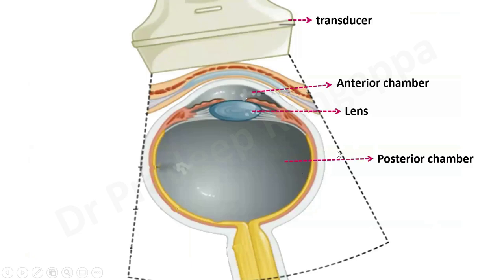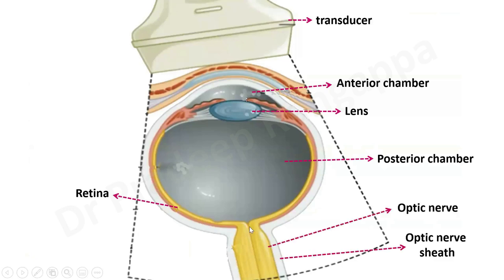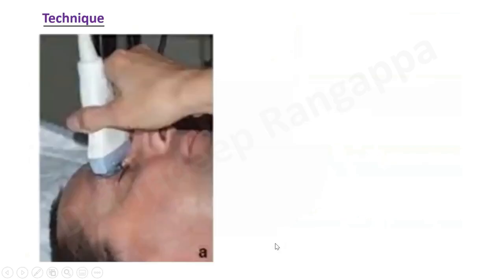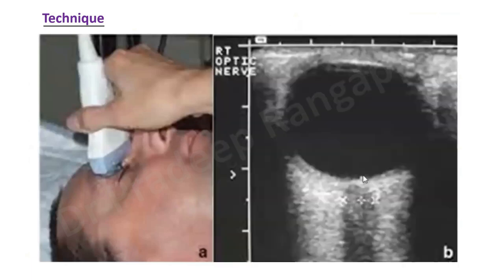With the probe, you would see the anterior chamber, the lens, the posterior chamber, and the retina. The key aspect you are interested in is the optic nerve and the optic nerve sheath around it. The technique is to place the vascular probe on the upper eyelid in a transverse position. You will visualize the optic nerve — you'll see the iris, the lens, the large posterior chamber, and the optic nerve emanating from the optic disc.